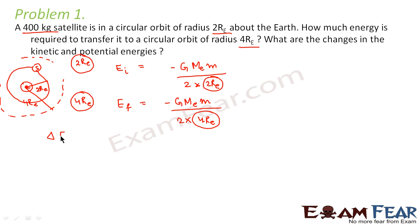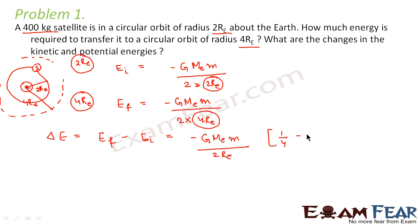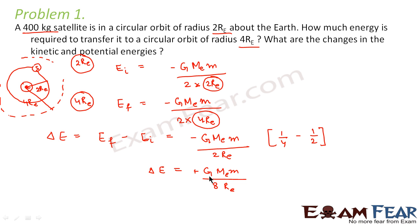Therefore the change in energy, delta E, equals EF minus EI, which equals minus G·Me·m divided by 2RE, times (1/4 minus 1/2). This comes out to be plus G·Me·m divided by 8RE. So this is the energy required to transfer the orbit from a radius of 2RE to a radius of 4RE.